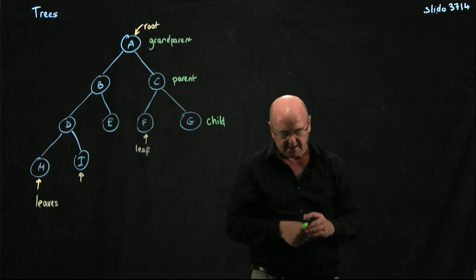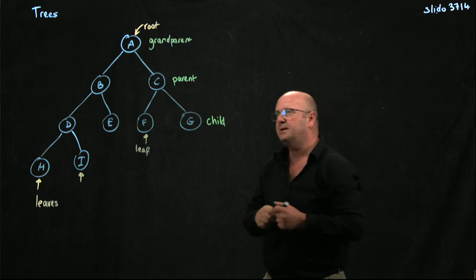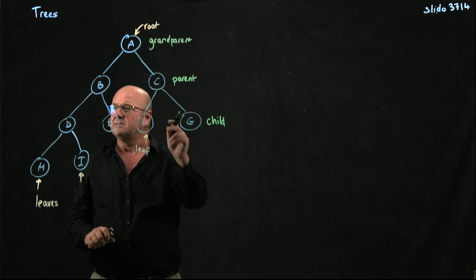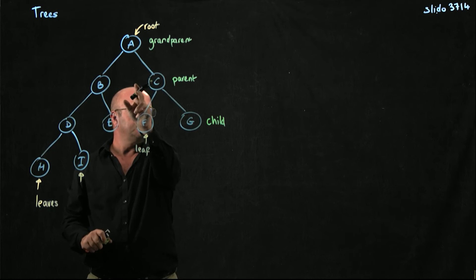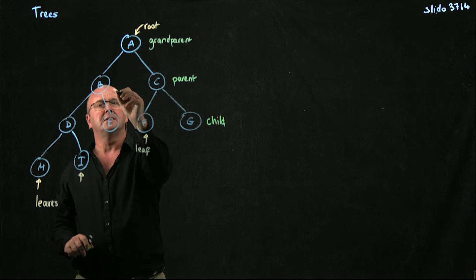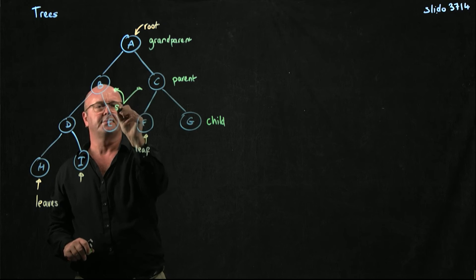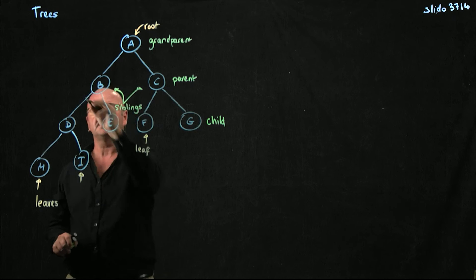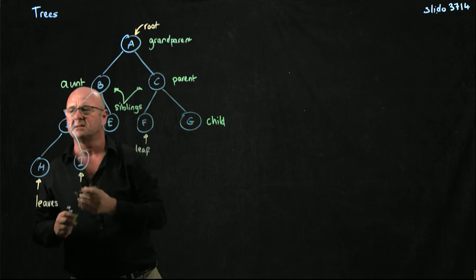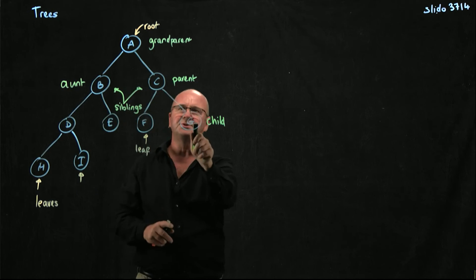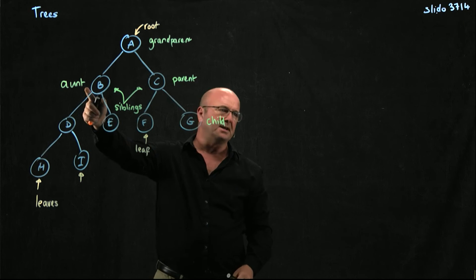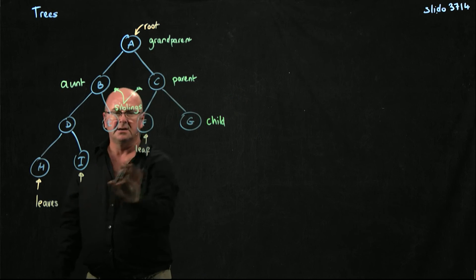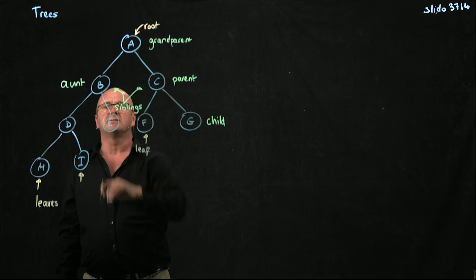We typically describe trees in the feminine — I don't know why. So we have child, parent, grandparent. Your mother's sibling — and these nodes are siblings. Your mother's sister, if she has one, is an aunt. So for node G, the aunt is B. So we've got siblings, leaves, children, parents, grandparents, and aunts.